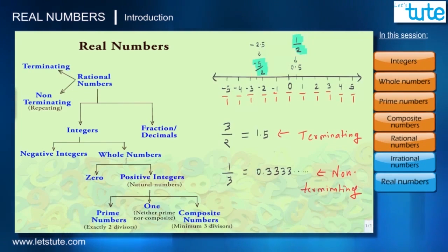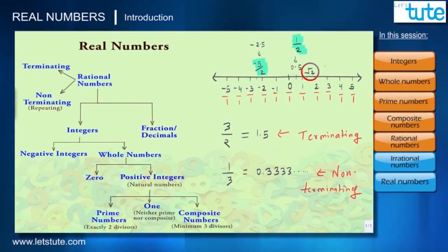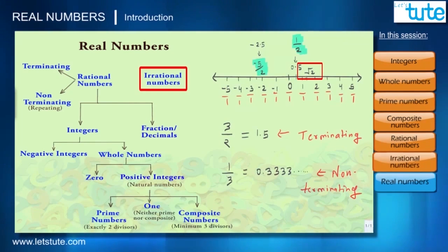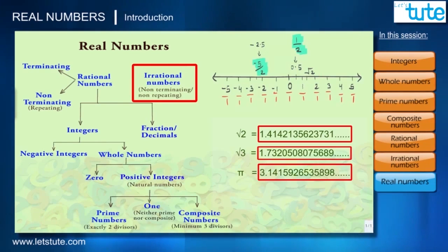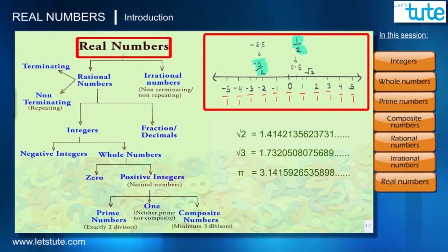There are also some numbers which can't be written as a ratio of integers. For example, between 1 and 2 we have the number √2, which can't be expressed as a ratio of two integers. These types of numbers are called irrational numbers. Note that the decimal form of all irrational numbers is non-terminating and non-repeating. Rational numbers and irrational numbers together form real numbers.